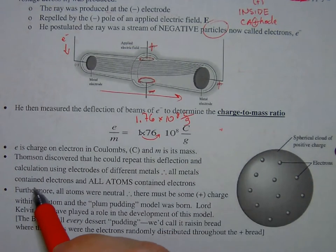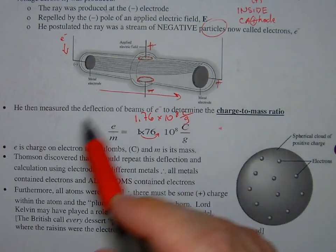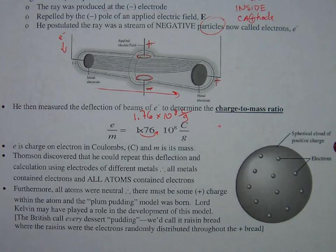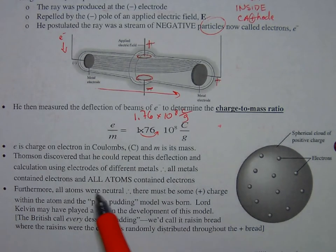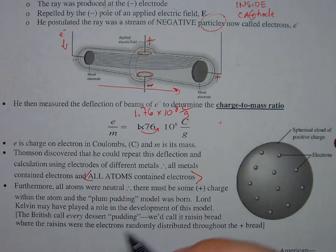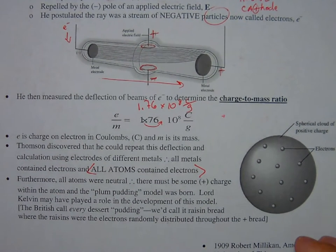And by the way, instead of calling it a cathode ray, he named the individual negative particles electrons. And from that, we get that all atoms contain electrons.